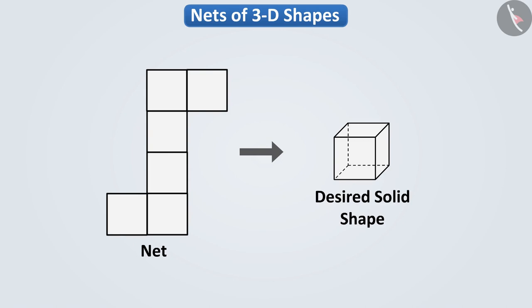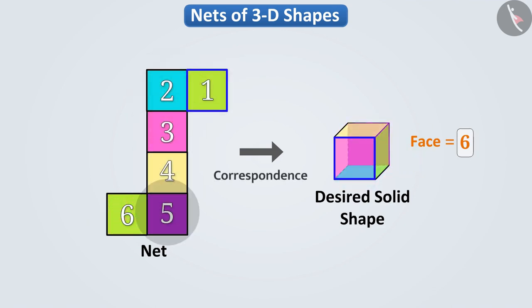While determining whether a given net can form the desired solid, we should keep in mind that the desired solid shape and the net shown have the same number of faces. At the same time, it is also important that there is a correspondence between the sizes of the faces in the net.